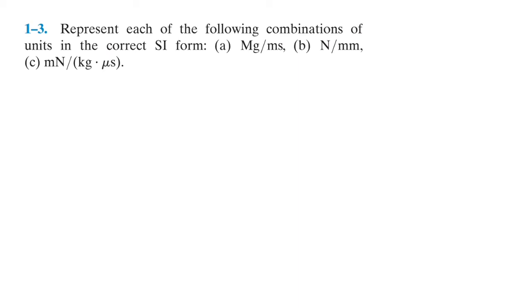Let's go ahead and do this problem. Represent each of the following combinations of units in the correct SI form. For part a, we have megagram over millisecond, so we want to convert that to seconds. For every second, there are ten to the third milliseconds.